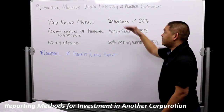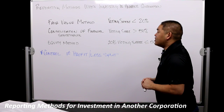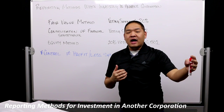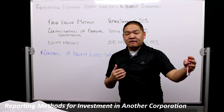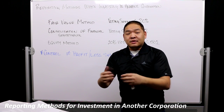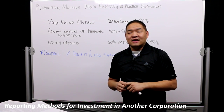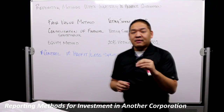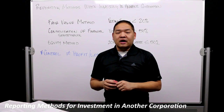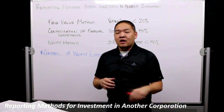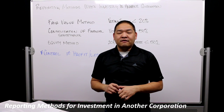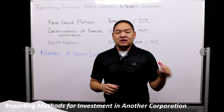The first method is the fair value method. We report our investment in the investee at fair market value. The fair market value can be a hard number to get — if the company is not traded on a public exchange, we don't actually know what the market value is on any given day. For example, if we bought a private company and own less than 10%, we might not know the fair value at year end.